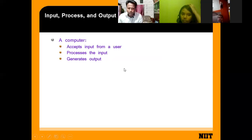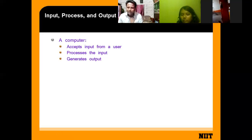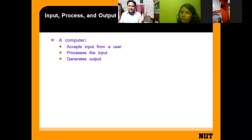Like when you are joining an online class, I am providing you a link. So that link is the input. You choose that link, then processing is going on. Processing means it is validating that the link I have given is correct or not, and then it connects you.